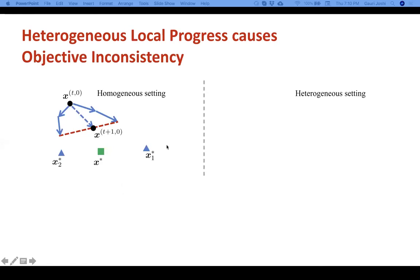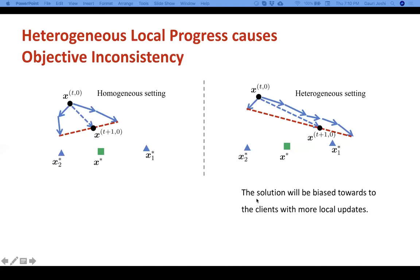But in a heterogeneous setting, when the number of local updates vary across clients, we get different behavior. Suppose client one performs many more local updates than client two, then this average global model x_{t+1} is biased towards client one's local objective. As a result, in general, the solution to federated learning in this heterogeneous setting will be biased towards clients which have more local updates. So what exactly does the solution converge to?